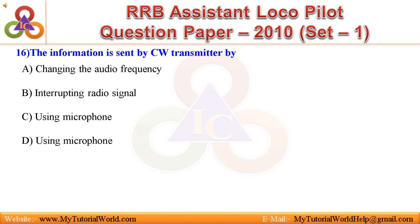Question 16: The information is sent by a CW transmitter by: A. Changing the audio frequency, B. Interrupting radio signal, C. Using microphone, D. Using microphone. Answer is Changing the audio frequency.